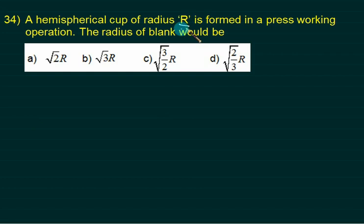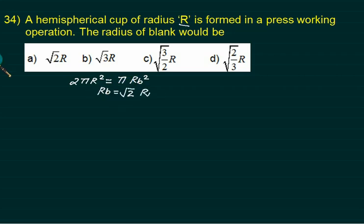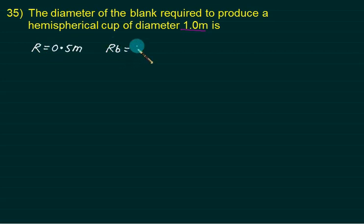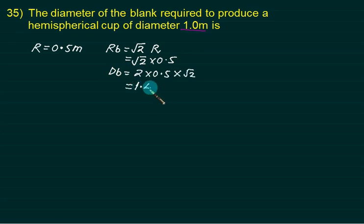For a hemispherical bowl of radius R, the surface area is 2πR² and the blank area is π·Rb². Setting them equal: π·Rb² = 2πR², so Rb = √2·R, meaning the blank diameter = √2·D = 1.414·D. For a hemisphere of diameter 0.1 m (radius 0.05 m), the blank radius is √2 × 0.05, giving a blank diameter of 1.414 × 0.1.